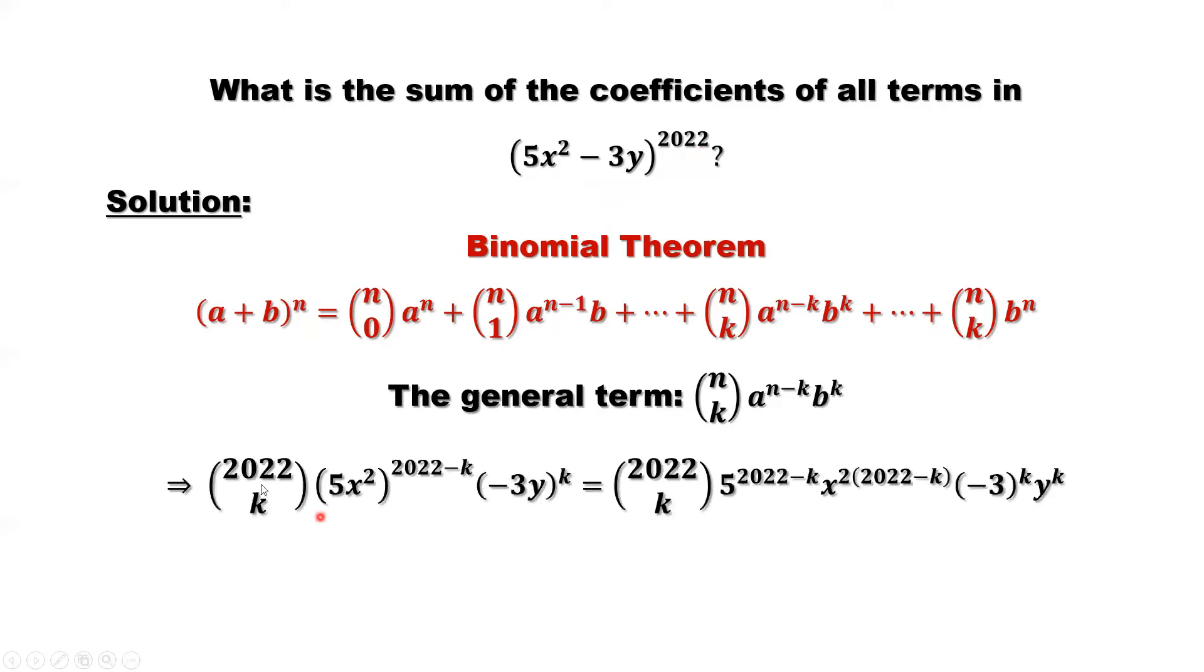This is the general term for our question. From 2022 choose k, this is a to the power n minus k, b to the power k. We separate numbers and x and y. So we take 5 outside and we only have x here and take negative 3 outside. We have y here only.